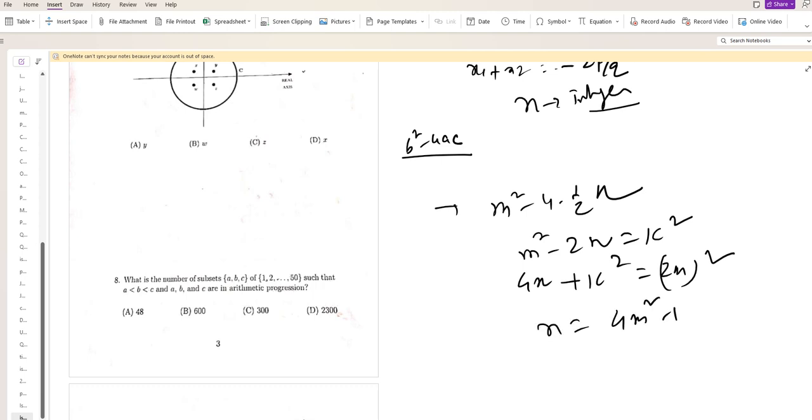So n is an integer. So 4m squared minus k squared, if you maintain, must be a multiple of 4.